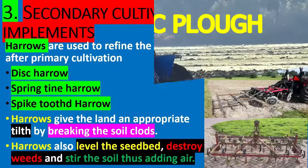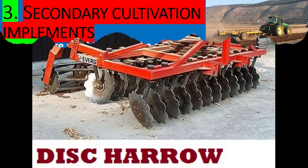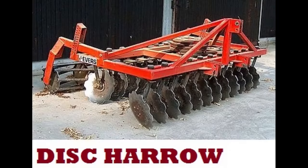3. Secondary Cultivation Implements. Harrows are used to refine the seedbed after primary cultivation. Disc Harrow.